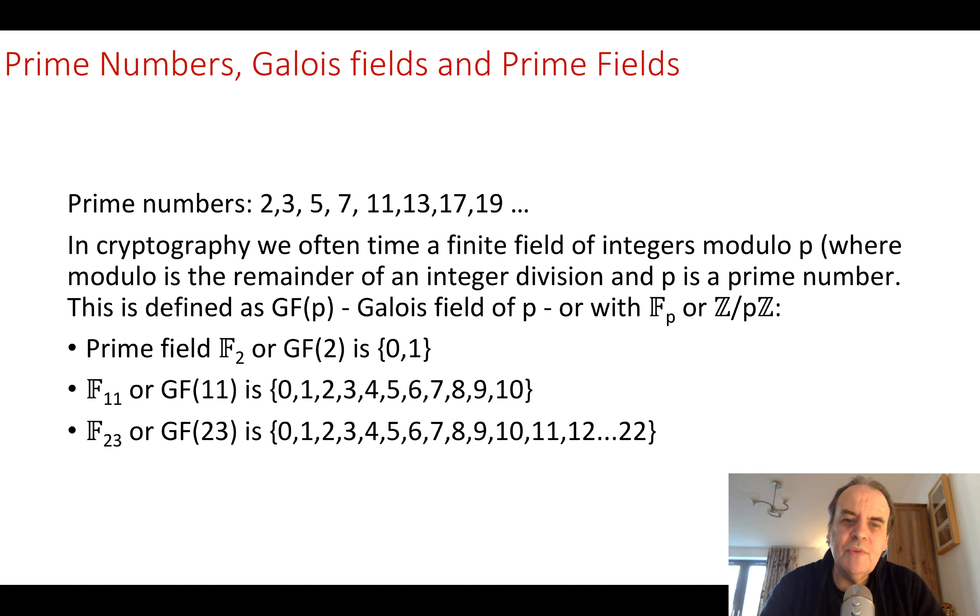The results we get are between 0 and p minus 1. So if we have a prime field of 2, then our output results are either 0 or 1. 11 gives us 0 up to 10 and 23 gives us 0 to 22.